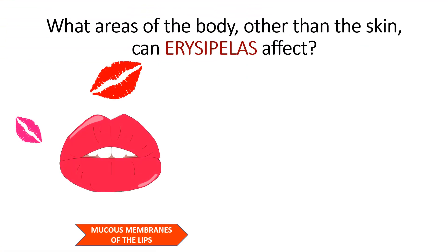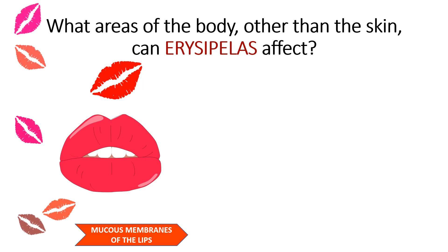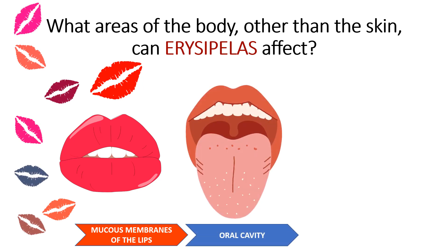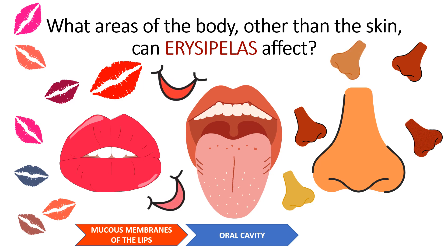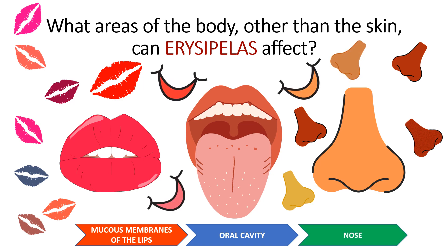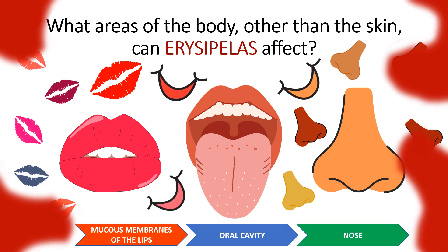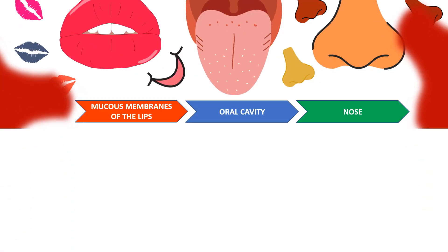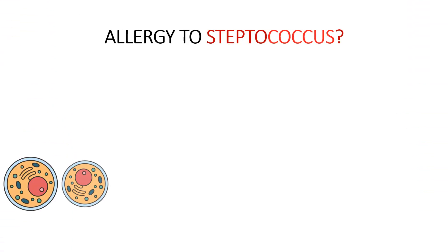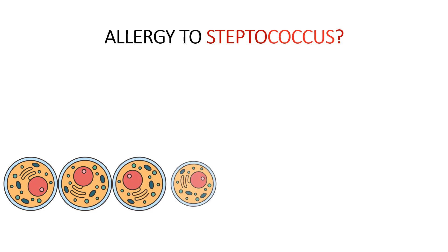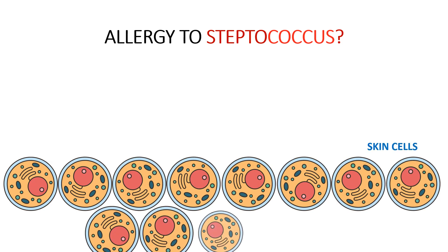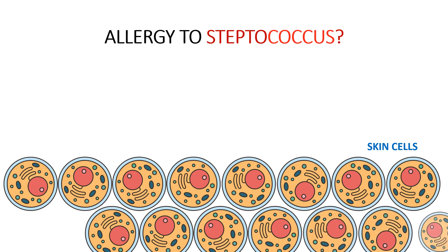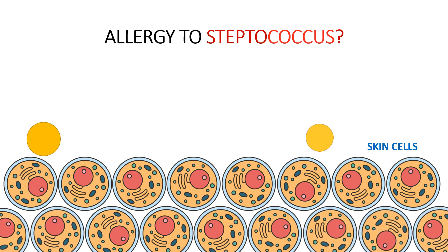What area of the body other than the skin can be affected by erysipelas? Erysipelas affects not only the skin but also the mucous membranes of the lips, mouth, and nose. In the pathogenesis of the disease, an important role is played by the allergic disposition of the body and sensitization to streptococcus.